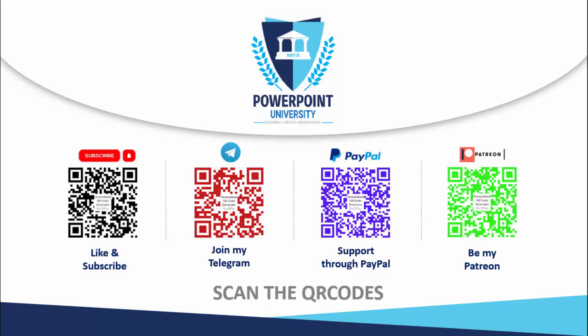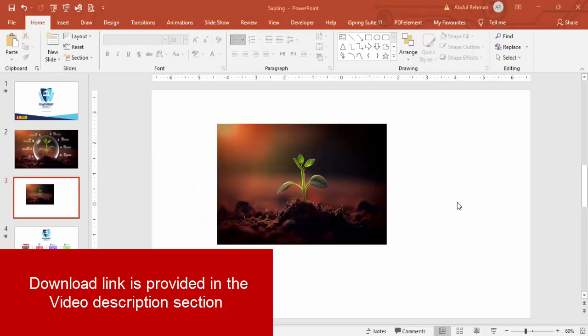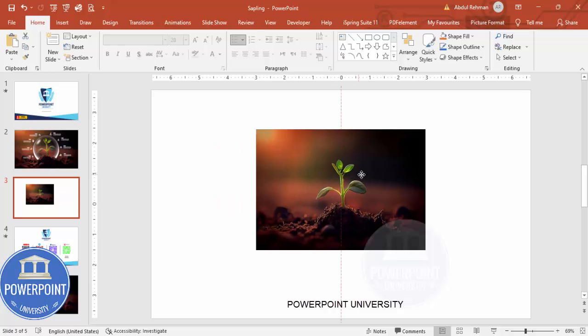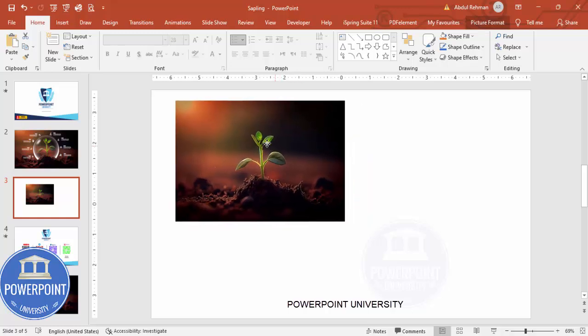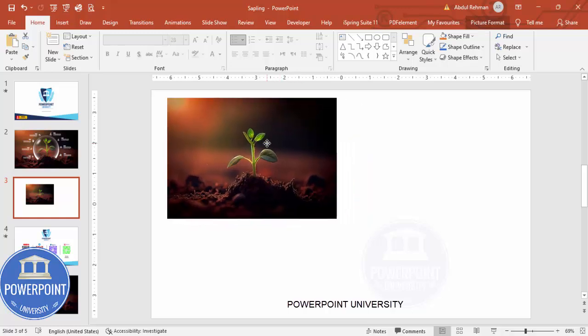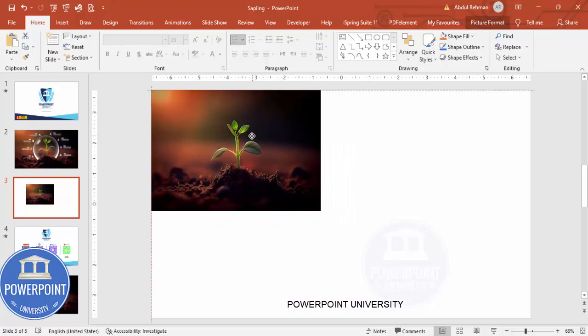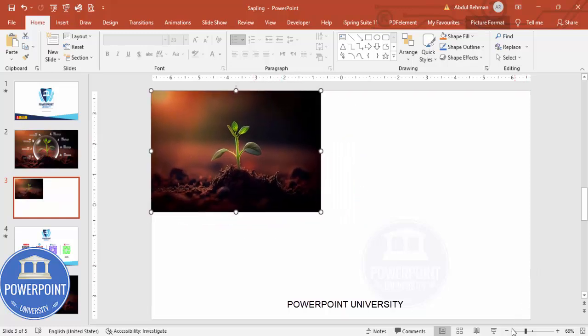Let's start the tutorial. Add a new slide and insert any image of a sapling or seedling from the internet. I've got this image from the internet — you can search and just copy the image you like. Now I'm going to cover the image to fit the slide.